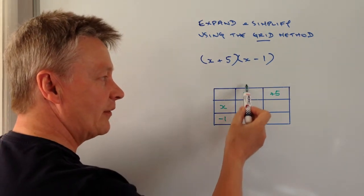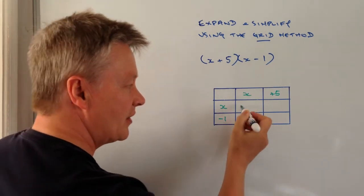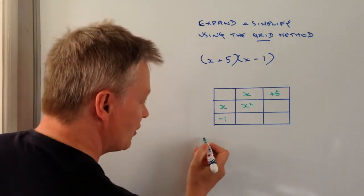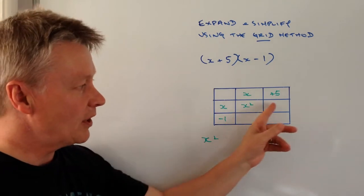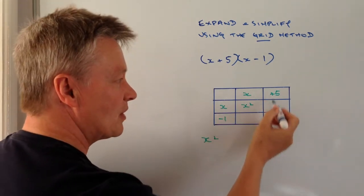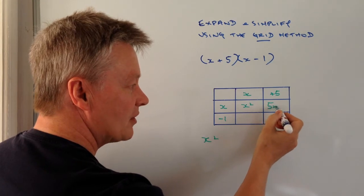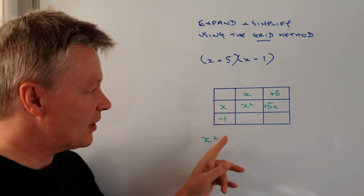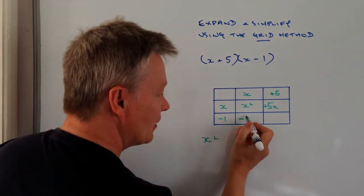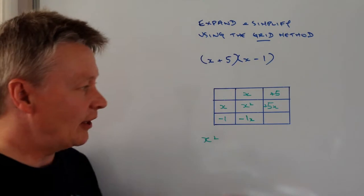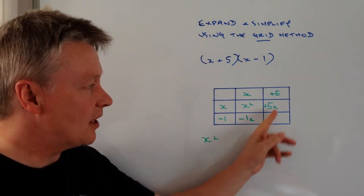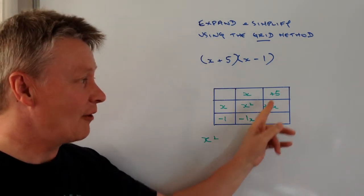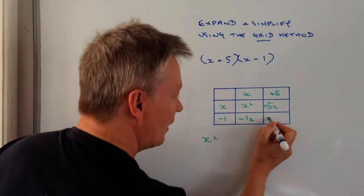So what we're saying is at the junction of the x and the x here, this is going to be x squared. And that's actually going to be my first term, which is x squared. My next one is I've got x times plus 5, well that's going to be plus 5x. This third one here is going to be minus 1 times x is minus 1x, and then finally I've got minus 1 times plus 5. Well minus times a plus is a minus, so 5 times 1 is minus 5.